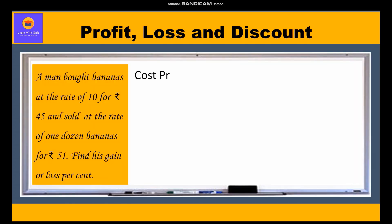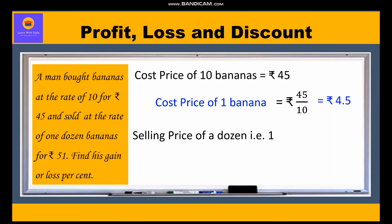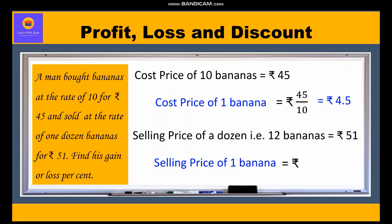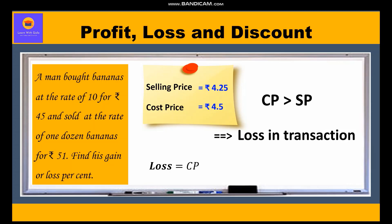Cost price of 10 bananas is ₹45, so cost price of one banana = 45 / 10 = ₹4.50. Selling price of a dozen (12) bananas is ₹51, so selling price of one banana = 51 / 12 = ₹4.25. Since cost price is greater than selling price, there is a loss. Loss = CP − SP = 4.50 − 4.25 = ₹0.25.